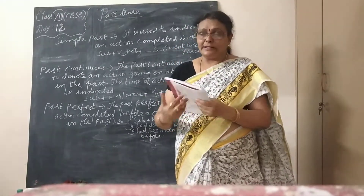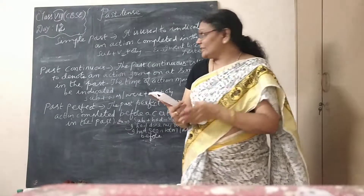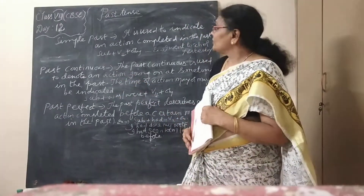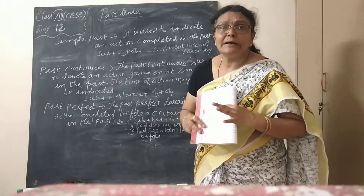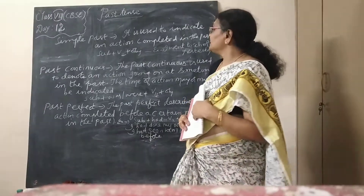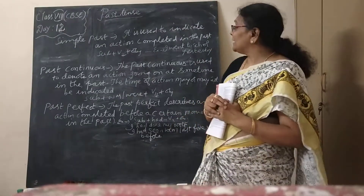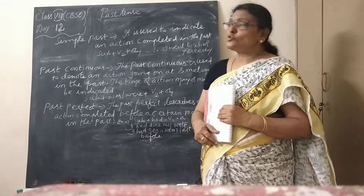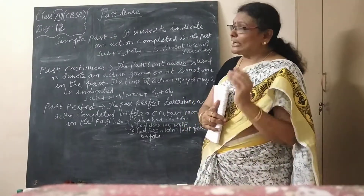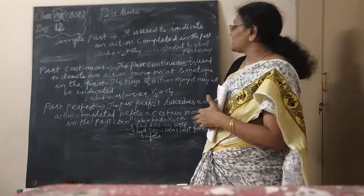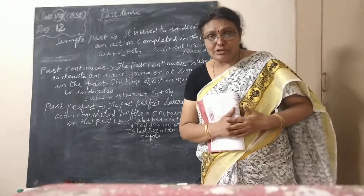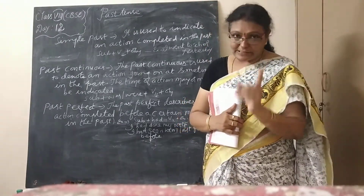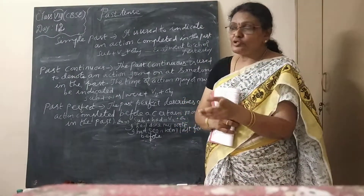You must be a little bit aware of past and past perfect, but anyway I am teaching you past continuous also. First of all, you must know what is simple past. Simple past is used to indicate an action completed in the past. The structure is: Subject + V2 + Object.